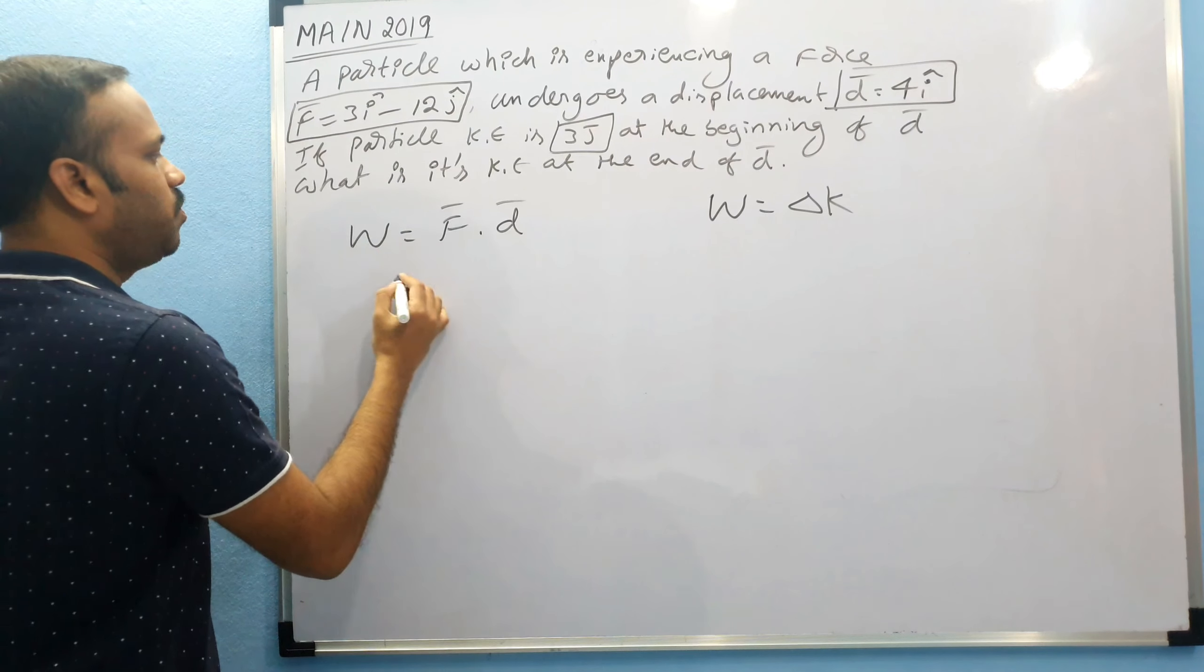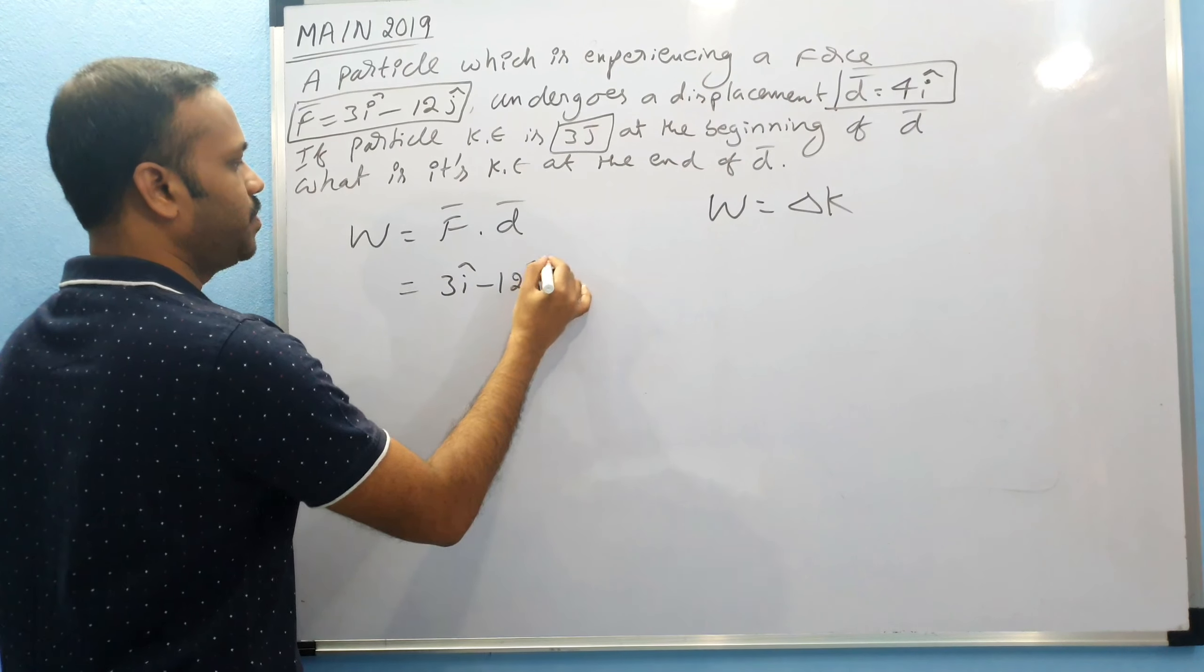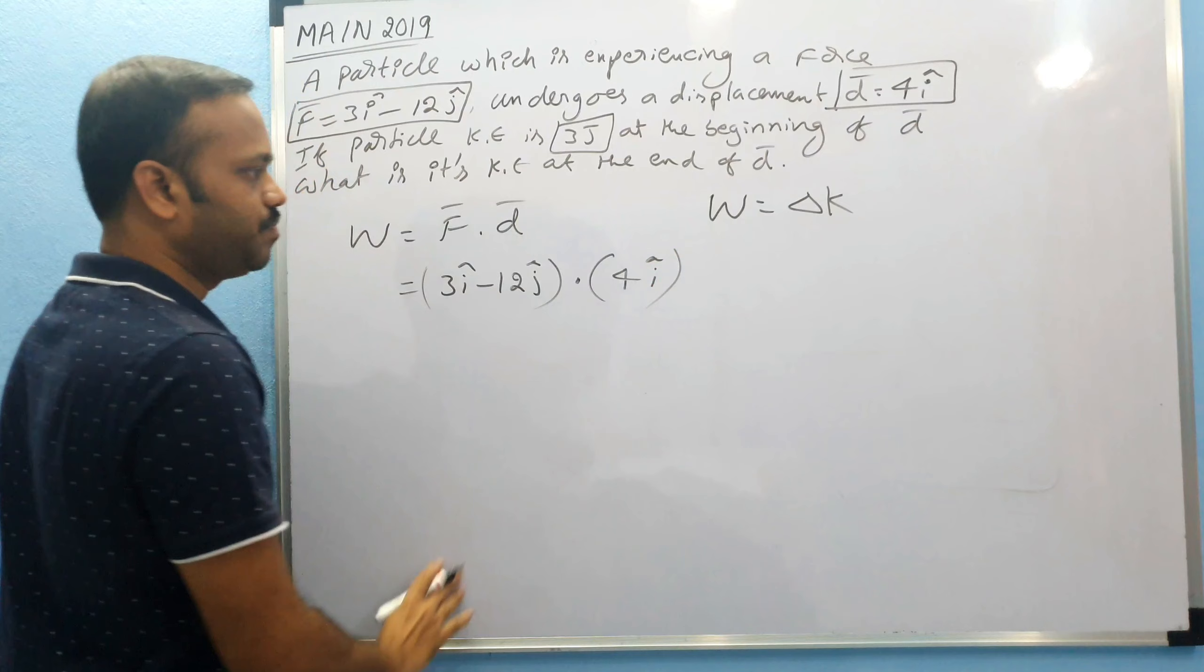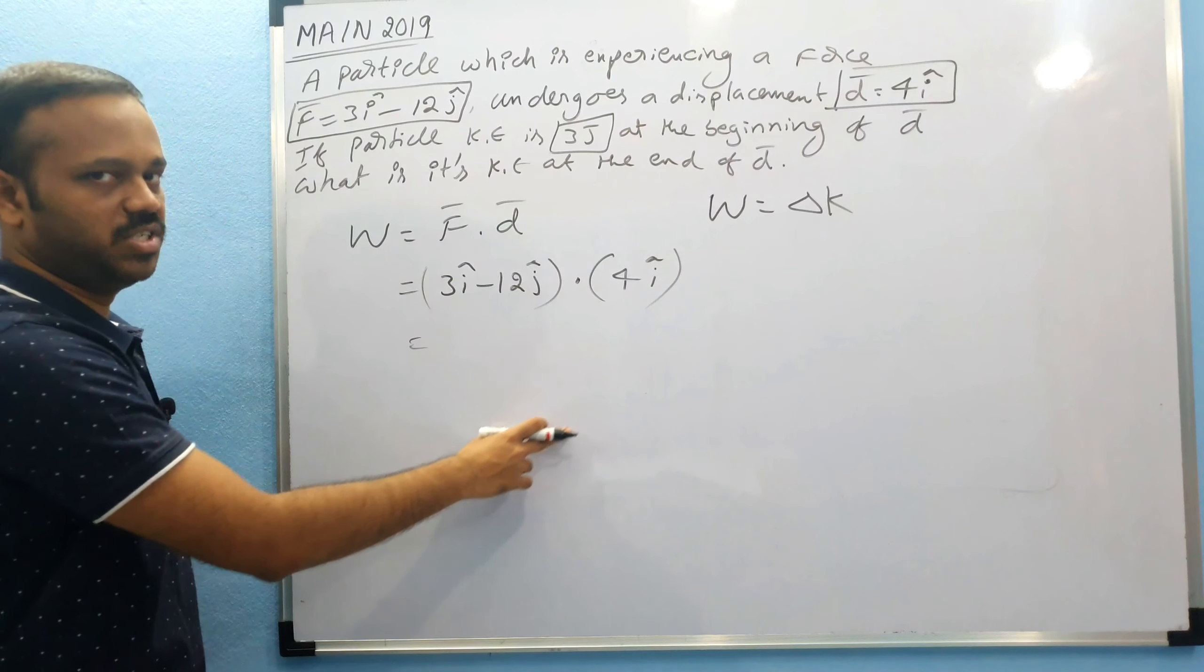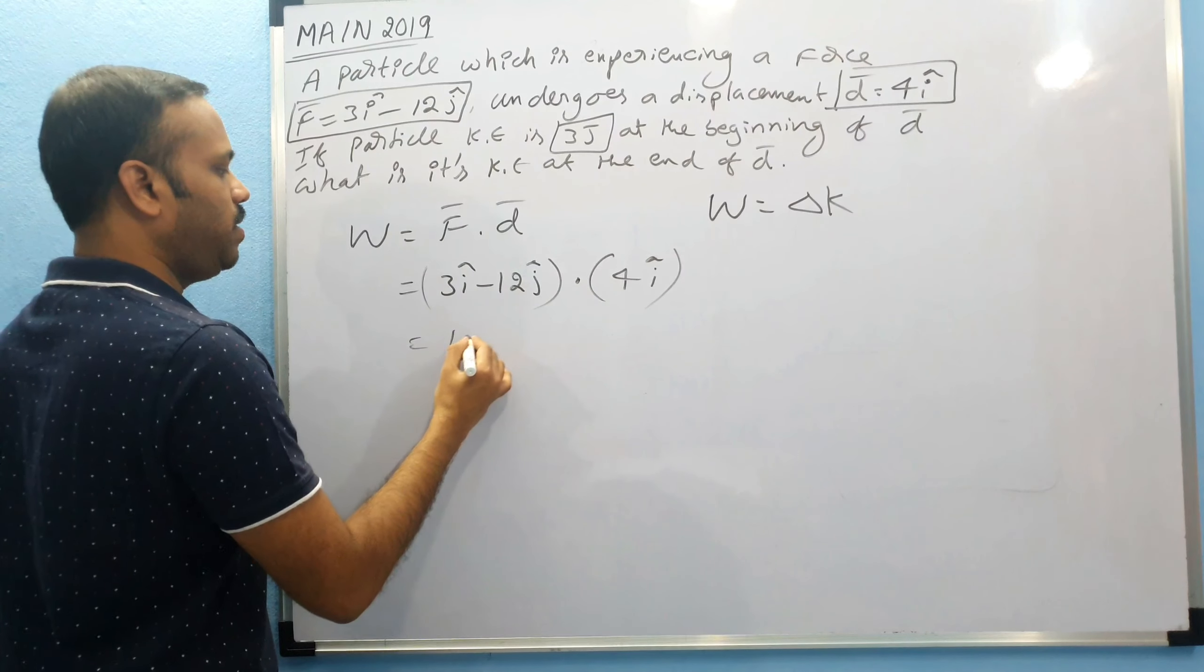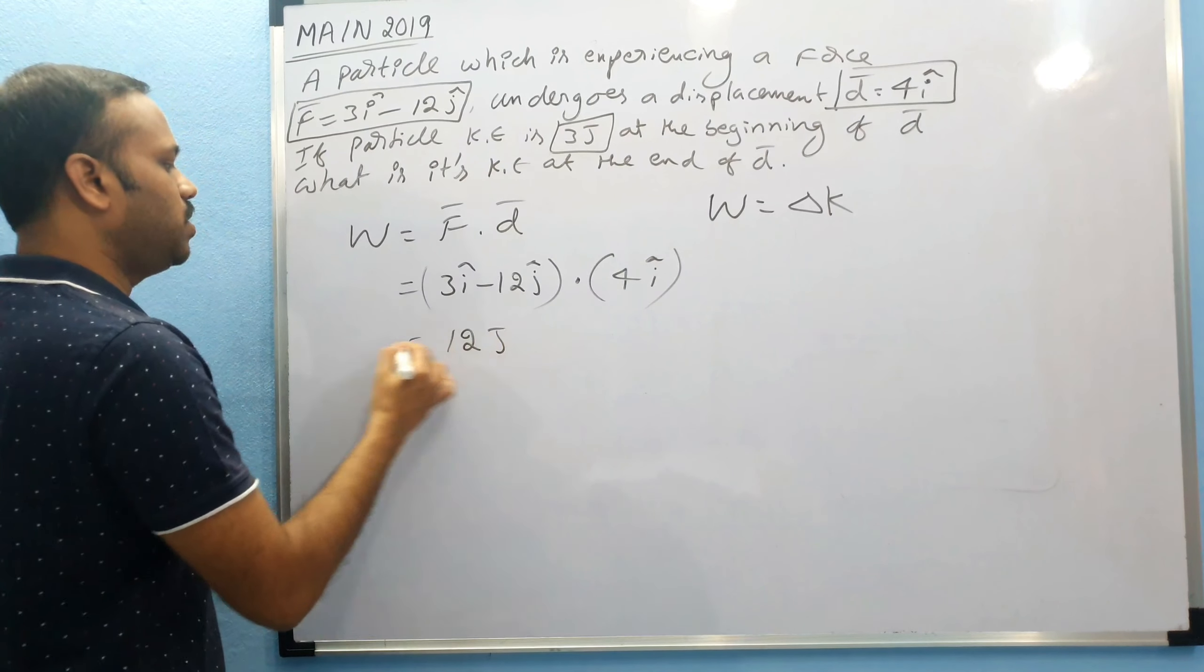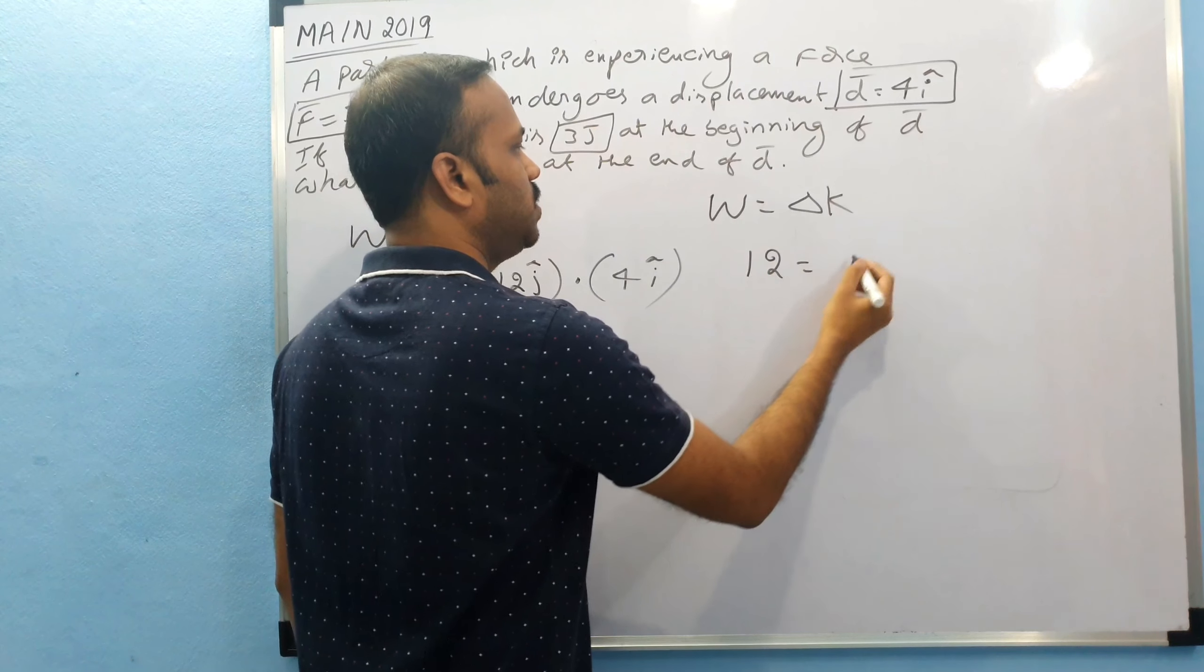Force is 3i - 12j and dot displacement is 4i, so there is no j, so 0 will be there for the j coefficient. 3×4 is 12, minus 12×0 is 0, so you get 12 joules as the work done.